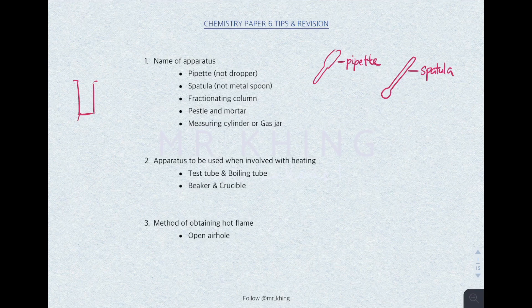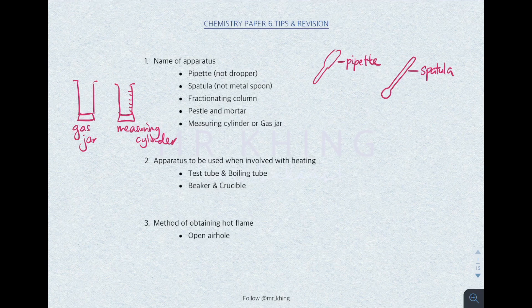And then there's a fractionating column — remember, it is present in fractional distillation. And then pestle and mortar — remember, the mortar is the bowl-like structure, and the pestle is the one that you hold to grind solid. Crucible and boiling tube are used when there is heating, because they can withstand high temperature.